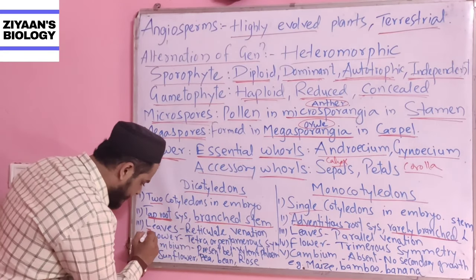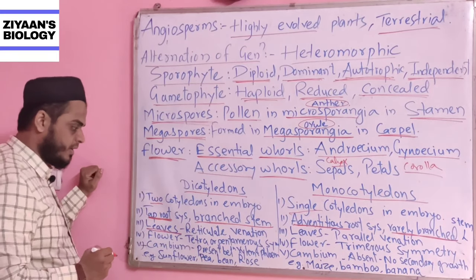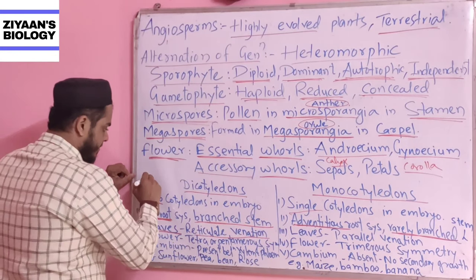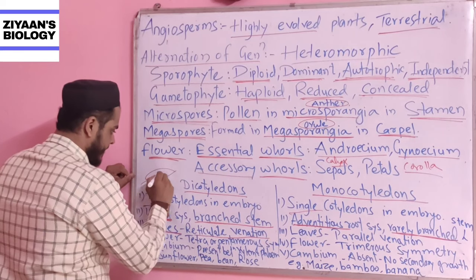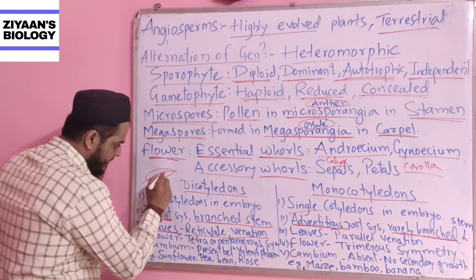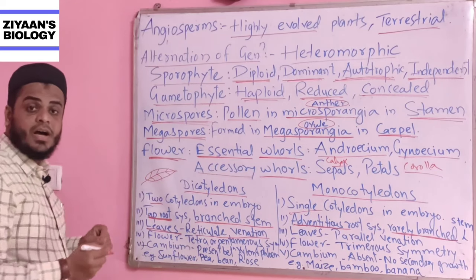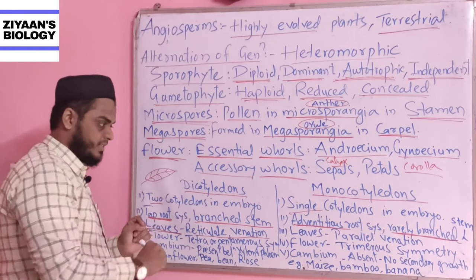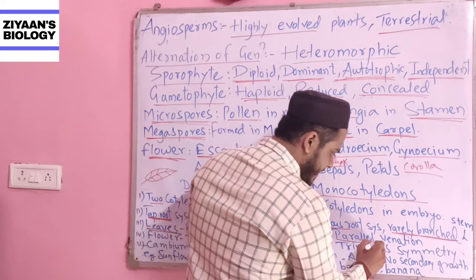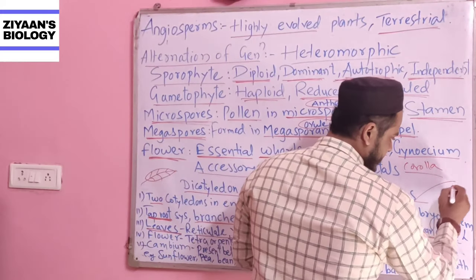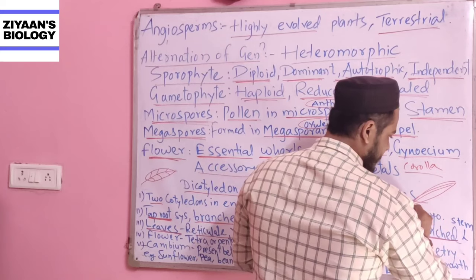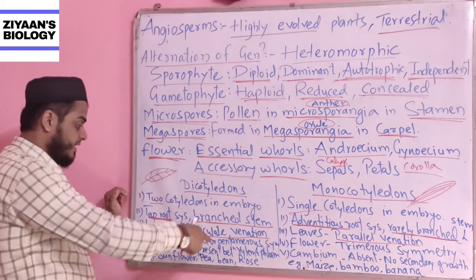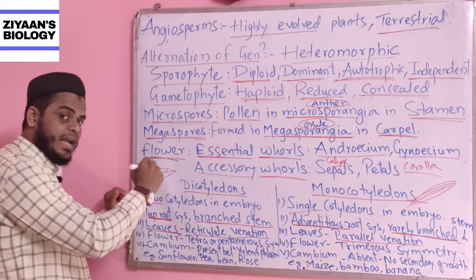The second difference is about leaves. The leaves of the dicotyledon class show reticulate venation — if you observe a leaf, you can see a net-like pattern, which is reticulate venation. Monocotyledon leaves show parallel venation, where the veins run parallel to each other. So parallel venation is seen in monocotyledons and reticulate venation in dicotyledons.